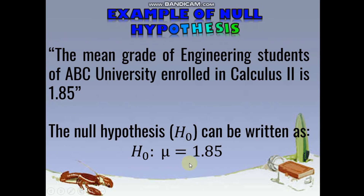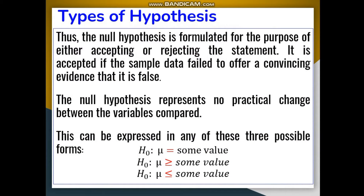We can also write the null hypothesis using other symbols. Aside from the equal sign, the null hypothesis can be written as: the mean is equal to some value, the mean is greater than or equal to some value, or the mean is less than or equal to some value. Just do not forget to include the equal sign. These are the valid ways to write your null hypothesis, where 'some value' is the given value in your problem.